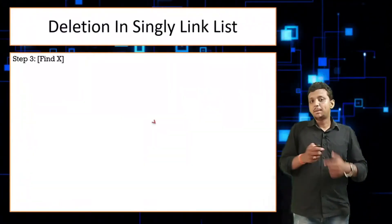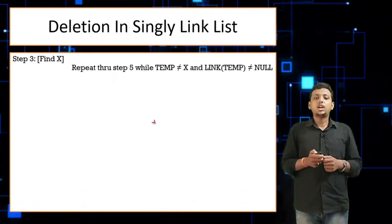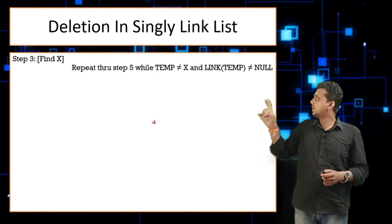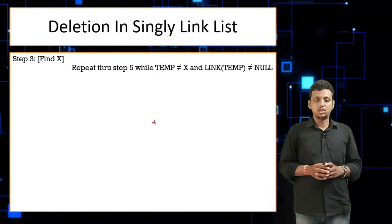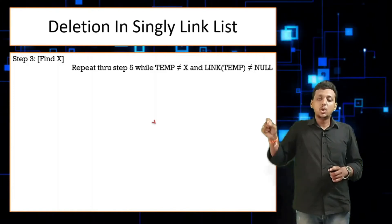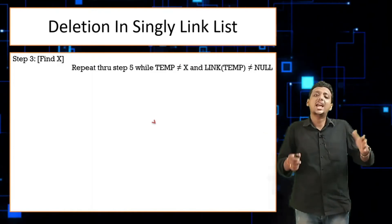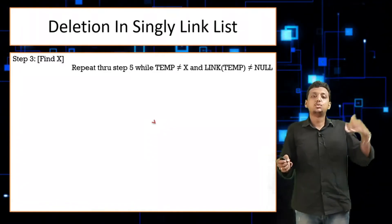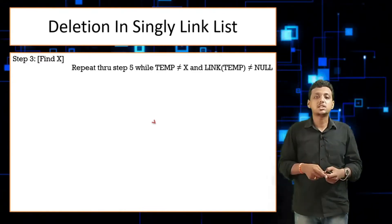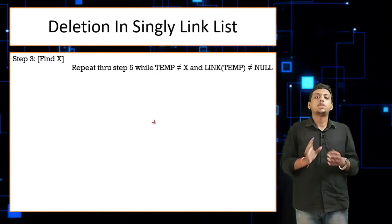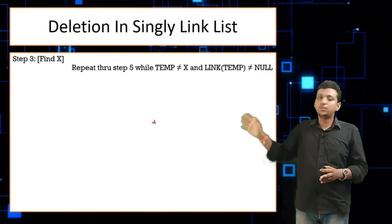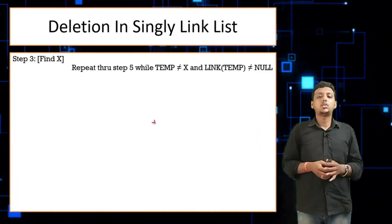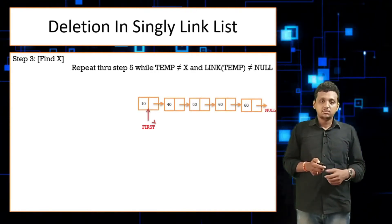After initializing temp, we start finding x by traversing. The loop condition is: repeat while temp is not equal to x AND link of temp is not equal to null. Both conditions must be true. We need this null check because if x is not in the linked list and you move past the end, link of temp becomes null — that's how we exit the loop without finding x.